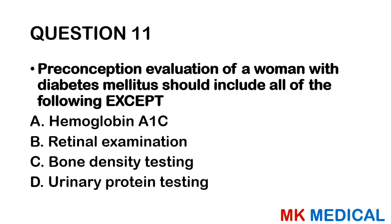Question 11 concerns glycemic control over the past 120 days. You can alternatively use glycated fructosamine, which is more specific. We perform retinal examinations for diabetes-related changes, test urine for proteins and ketones. Bone density testing has no role in evaluating diabetes. The answer is C.